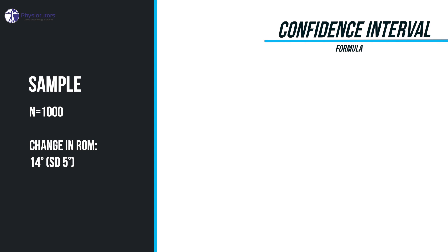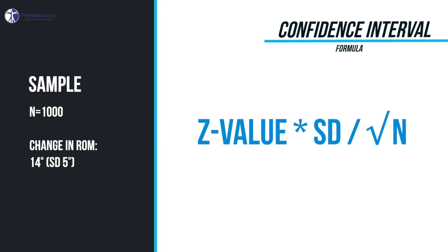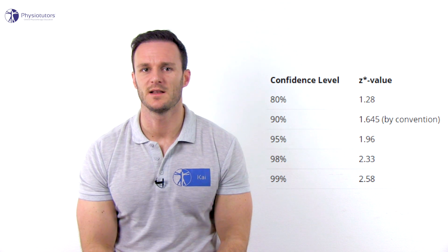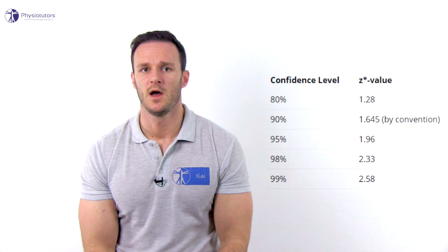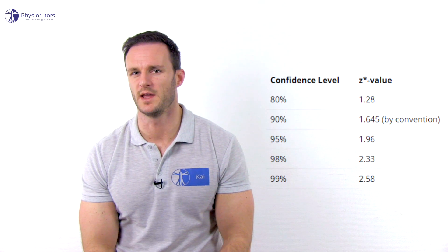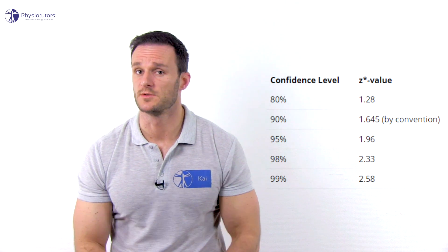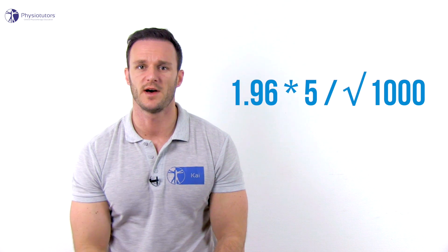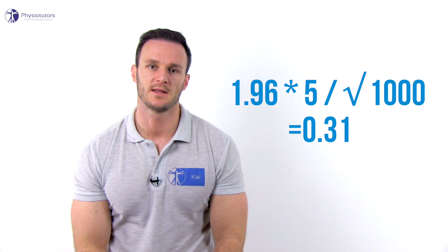We can calculate the confidence interval by taking the set value times the standard deviation divided by the root of the number of patients. The set value can be derived from the table next to me and shows which area is contained in the confidence interval. For the 95% confidence interval, we take all values between minus 1.96 and plus 1.96 times the standard deviation. In our example, we take 1.96 times 5 divided by the root of 1000 and we get 0.31.